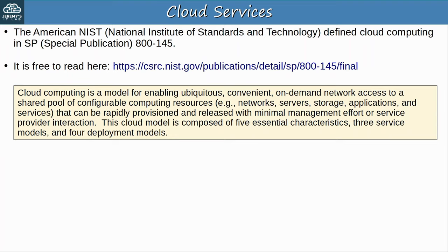First, Software as a Service, SaaS. The capability provided to the customer is to use the provider's applications running on a cloud infrastructure. The applications are accessible from various client devices through either a thin client interface such as a web browser — for example web-based email — or a program interface. The customer does not manage or control the underlying cloud infrastructure including network, servers, operating systems, storage, or even individual application capabilities. Microsoft Office 365 is a popular example of SaaS — Microsoft Office, Word, PowerPoint, Excel, etc., provided over Microsoft's cloud infrastructure. Other examples include Google's G Suite, which includes Gmail.